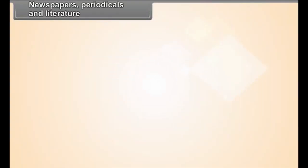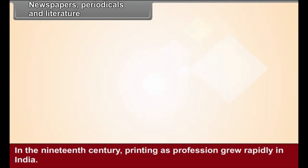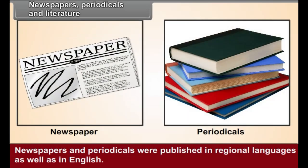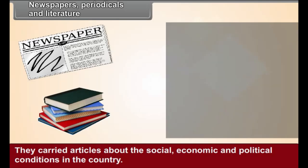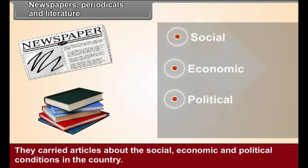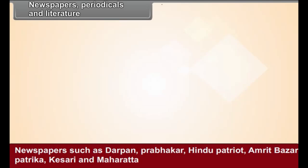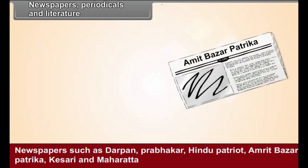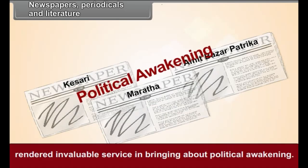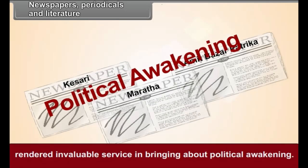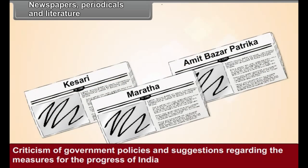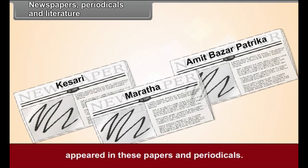Newspapers, Periodicals, and Literature: In the 19th century, printing as a profession grew rapidly in India. Newspapers and periodicals were published in regional languages as well as in English, carrying articles about the social, economic and political conditions in the country. Newspapers such as Darpan, Prabhakar, Hindu Patriot, Amrit Bazaar Patrika, Kesari, and Maharatta rendered invaluable service in bringing about political awakening. Criticism of government policies and suggestions regarding measures for the progress of India appeared in these papers and periodicals.